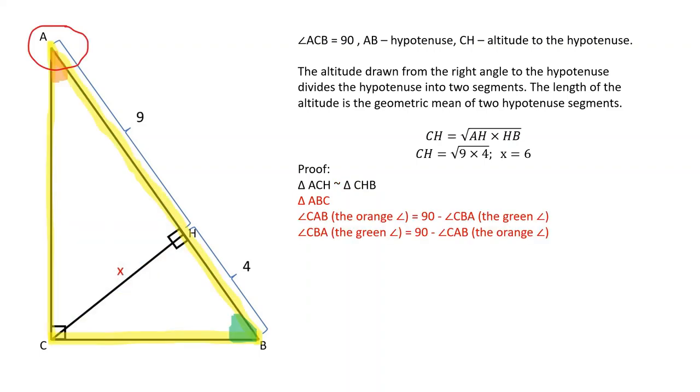In triangle ABC, angle CAB, the orange angle, is equal to 90 minus angle CBA, the green angle. And angle CBA, the green angle, is equal to 90 minus angle CAB, the orange angle.